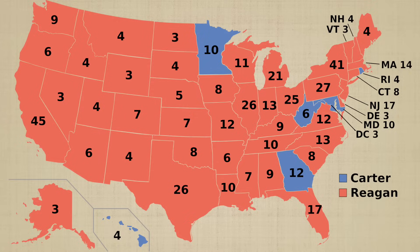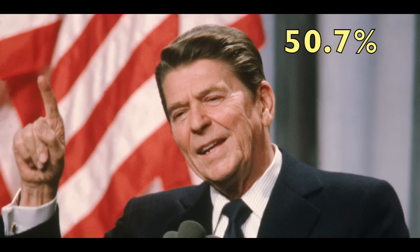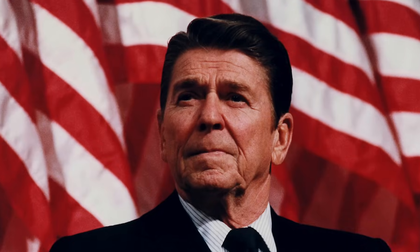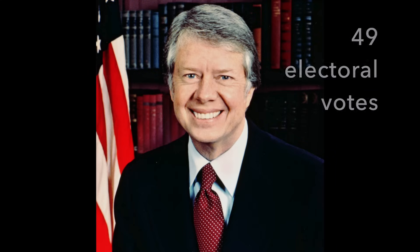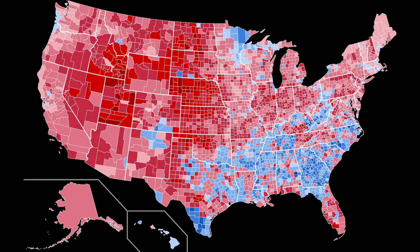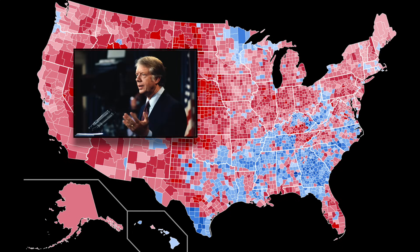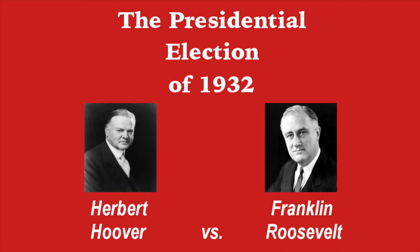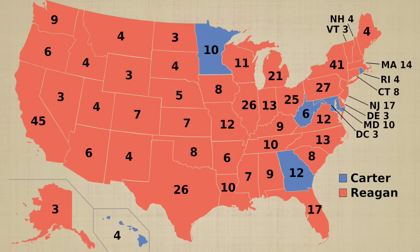Ronald Reagan easily won, becoming the 40th President in American history. He received 489 electoral votes, the most ever for a president elected for the first time — pretty impressive for a guy who had been called a radical by opponents for so long. He also got a strong 50.7% of the popular vote, and was the oldest president ever elected. Jimmy Carter received just 49 electoral votes and 41% of the popular vote — the worst performance by an incumbent president since Herbert Hoover in 1932. In terms of the electoral vote, this was the most lopsided defeat for any incumbent president in an election where only two candidates received electoral votes. I know you're still alive, President Carter, so if you're watching this, I hope you skipped over this part.